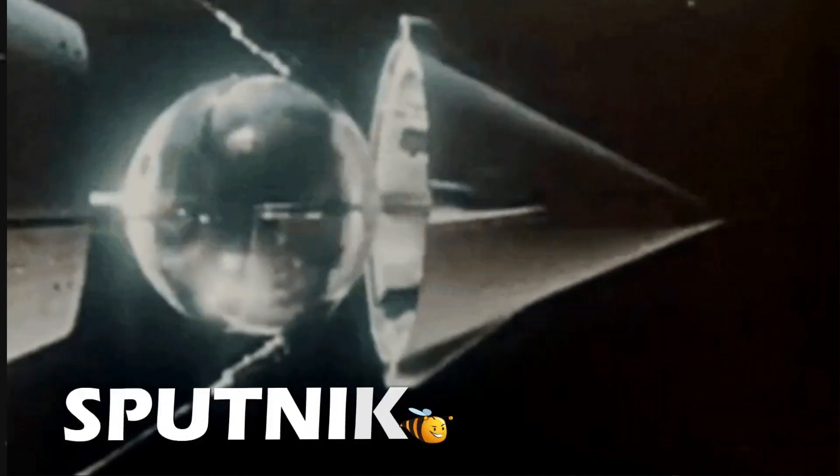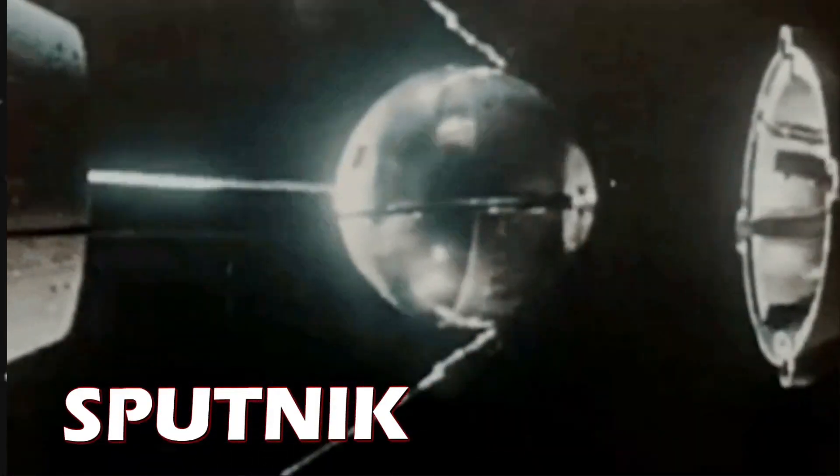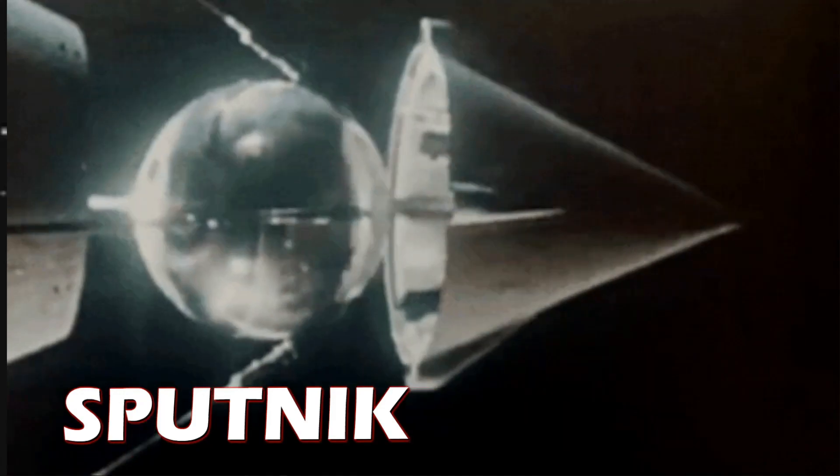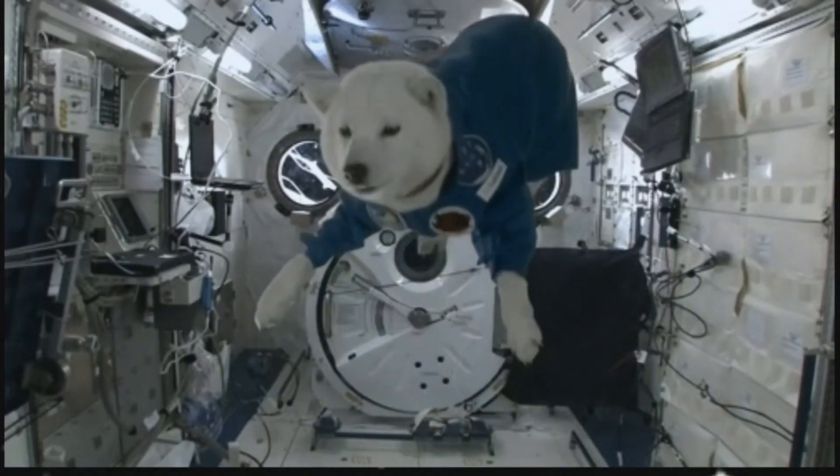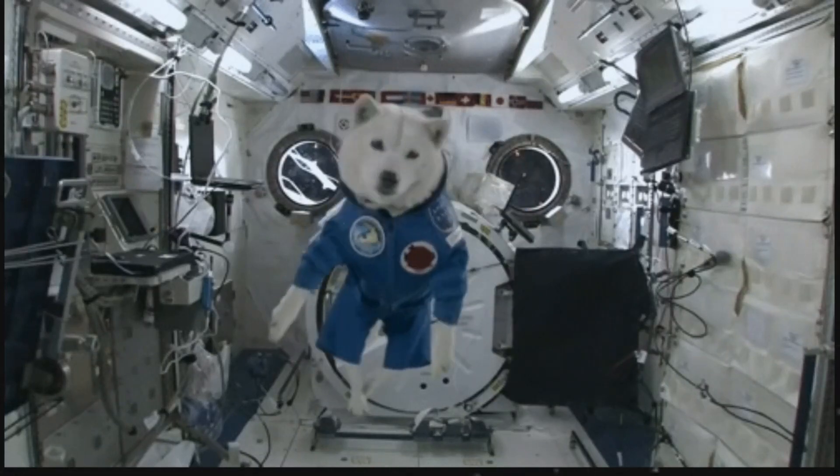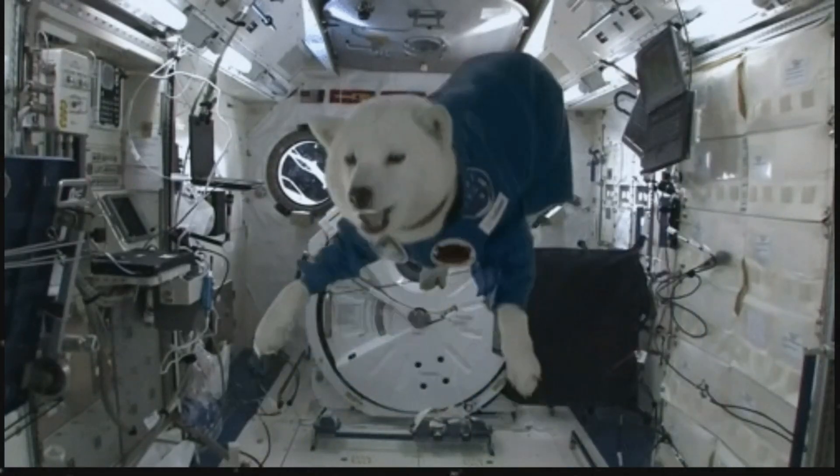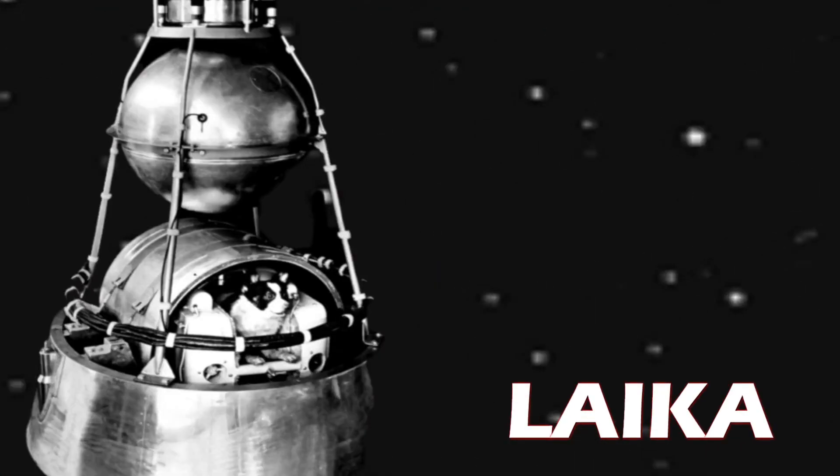Sputnik from Russia was the first spacecraft sent to space in 1957. The first astronaut, a living creature, was a dog named Laika sent after one month by Sputnik 2.